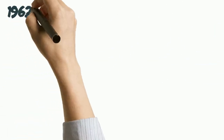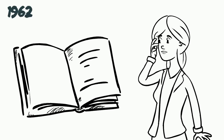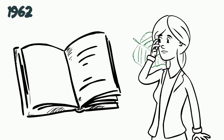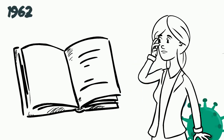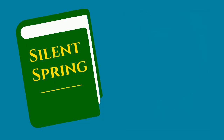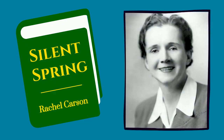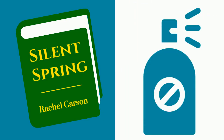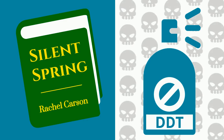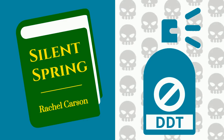This continued until 1962, when a single book helped the public understand how environmental impacts affected them personally. It was called Silent Spring, and it was written by a woman named Rachel Carson. In her book, she wrote about synthetic pesticides — especially one called DDT — and their adverse effects on the environment and human health.